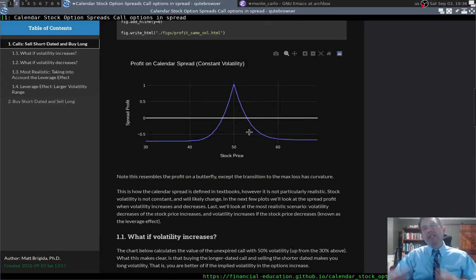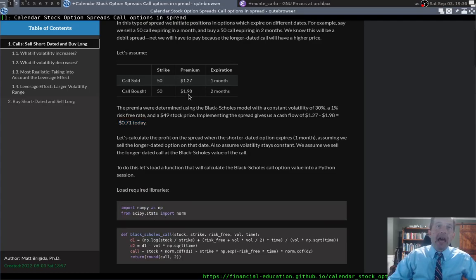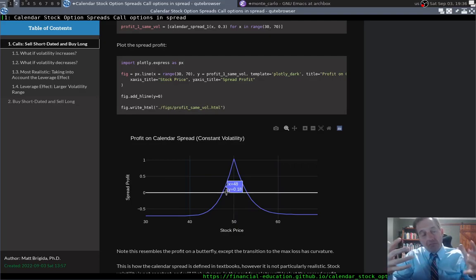Good. So this is generally what textbooks will say when they cover calendar spreads. Additionally, you could note that if we had bought this option and sold this, then this P&L would just be reflected about the axis. And I'll also note that we did this with calls, but we can create the same thing with put-call parity. What we can do with calls, we can do with puts.